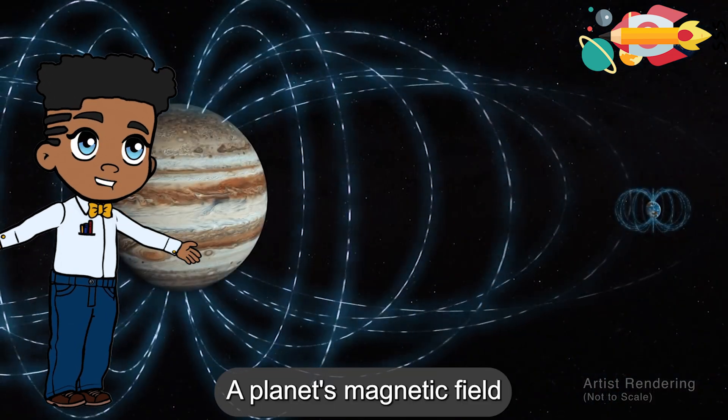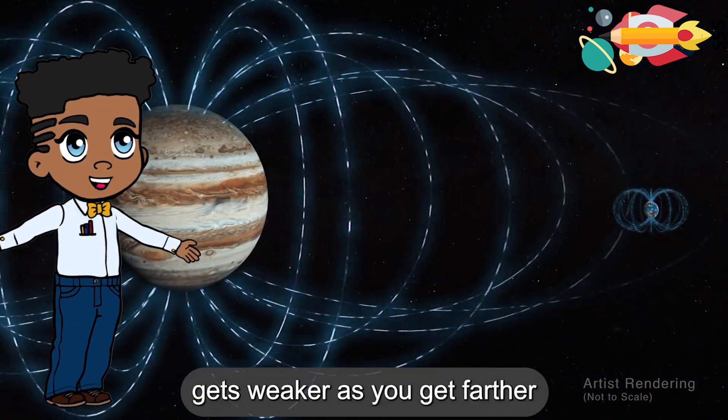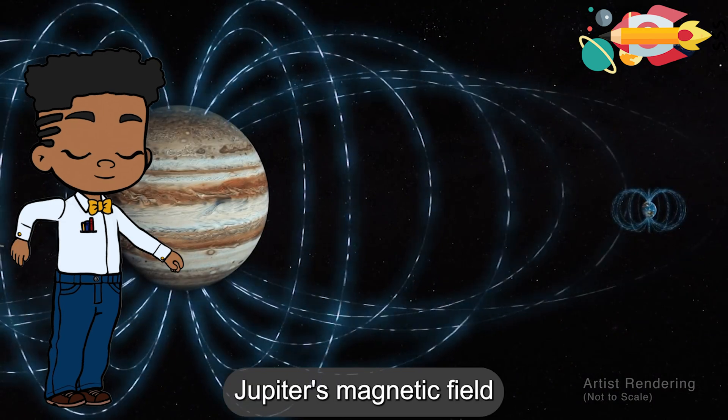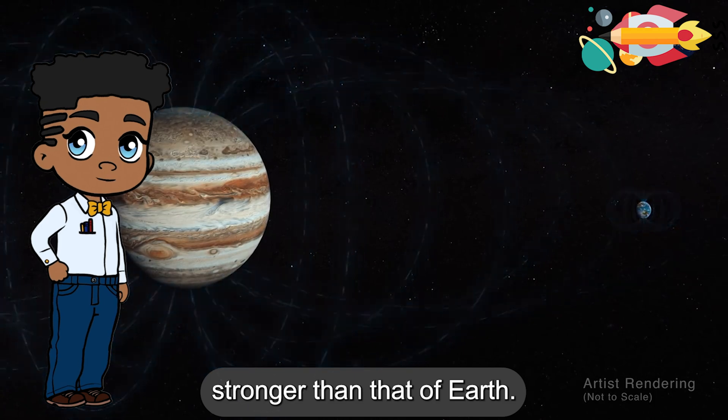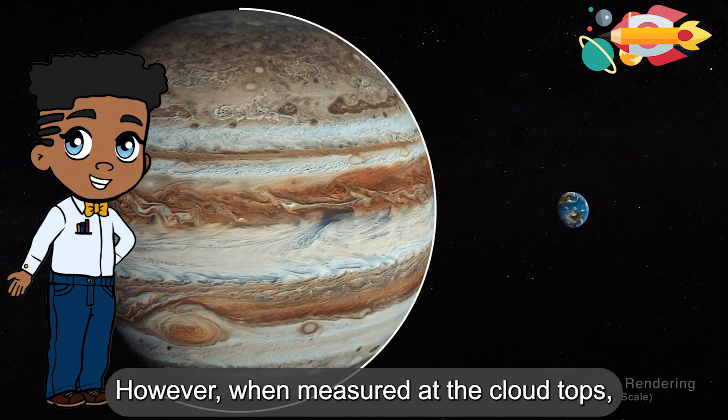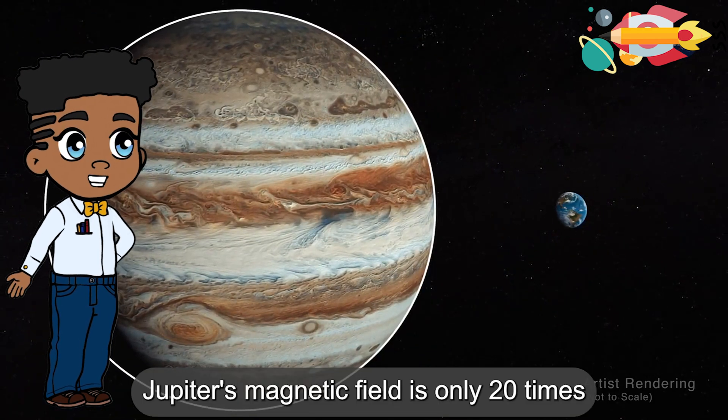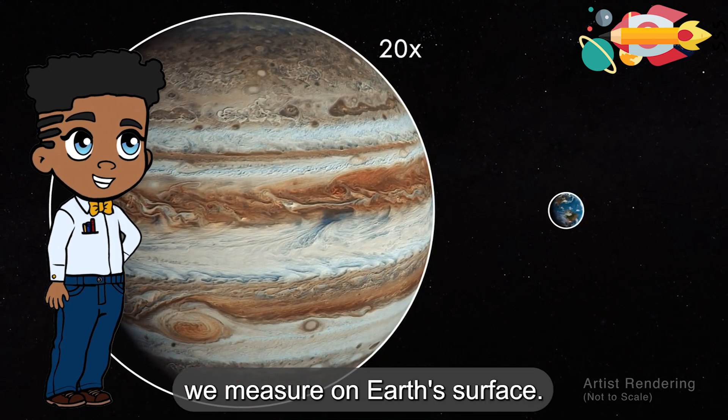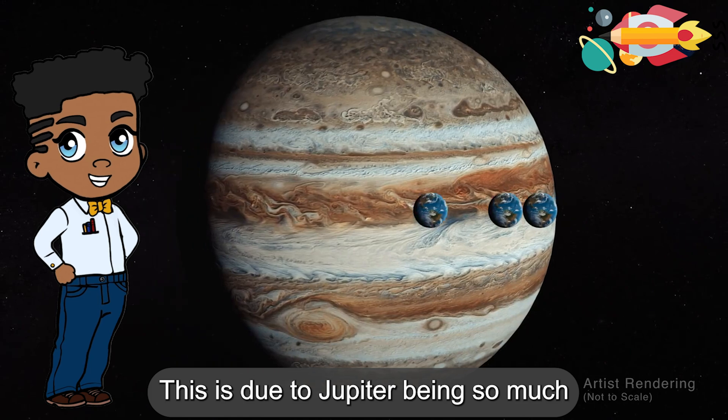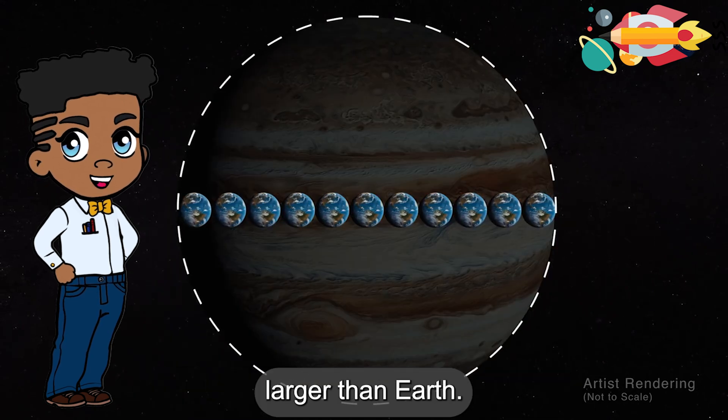A planet's magnetic field gets weaker as you get farther from its core. Jupiter's magnetic field is 10,000 times stronger than that of Earth. However, when measured at the cloud tops, Jupiter's magnetic field is only 20 times greater than what we measure on Earth's surface. This is due to Jupiter being so much larger than Earth.